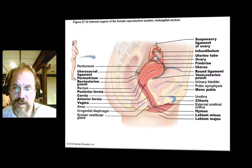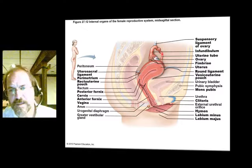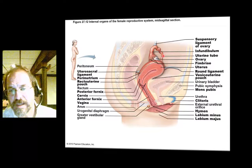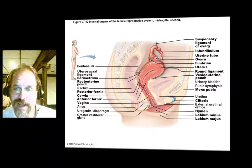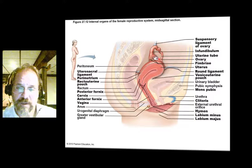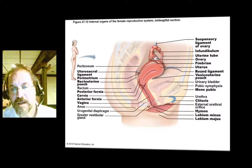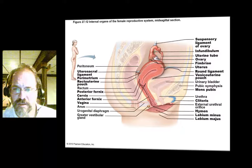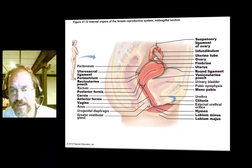Coming off the uterine horns on the side of the uterus, we have the fallopian tube or uterine tube — a fairly short tube, several centimeters long, terminating in leafy structures called fimbrae that surround the ovary. The ovary is connected to the uterus by an ovarian ligament. The fallopian tube is supported laterally by a suspensory ligament containing blood vessels. A big sheet of mesentery called the broad ligament encompasses all of this.